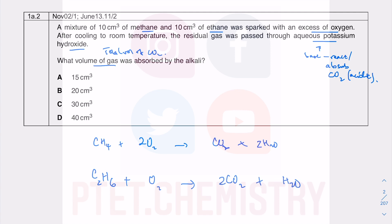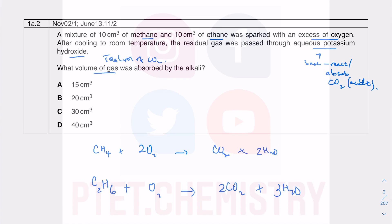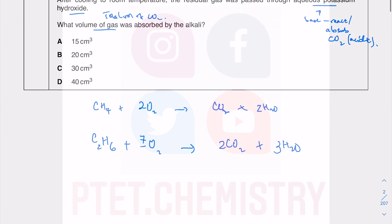For ethane: 3H₂O gives 3 oxygen atoms; 2CO₂ gives 4 oxygen atoms — total 7 oxygen atoms on the right. So you need 7/2 O₂ on the left. I use fractions because 7/2 × 2 = 7, which is fine in balancing equations as long as you don't change the identity of the molecules. The total oxygen atoms balance at 7 on each side.